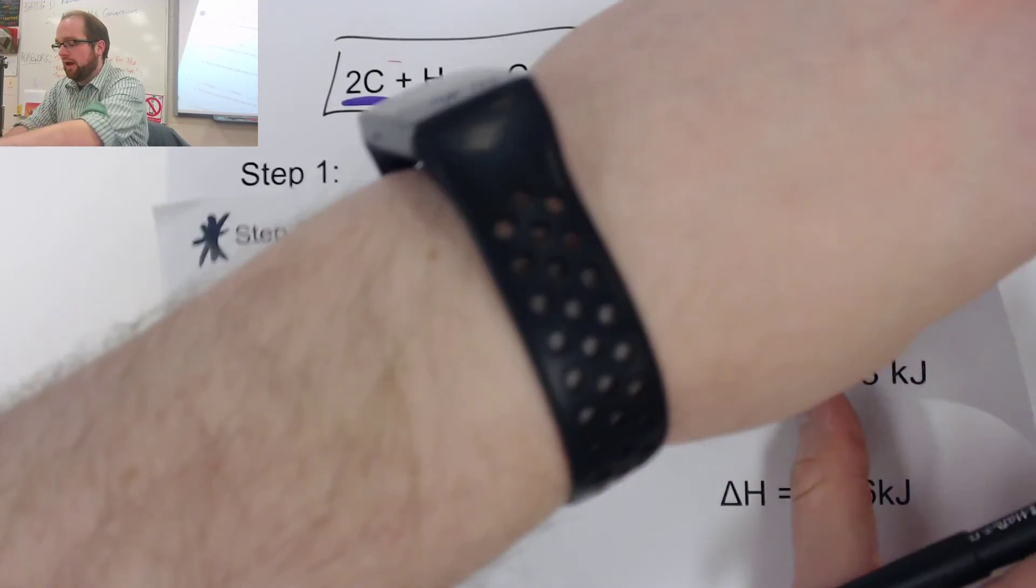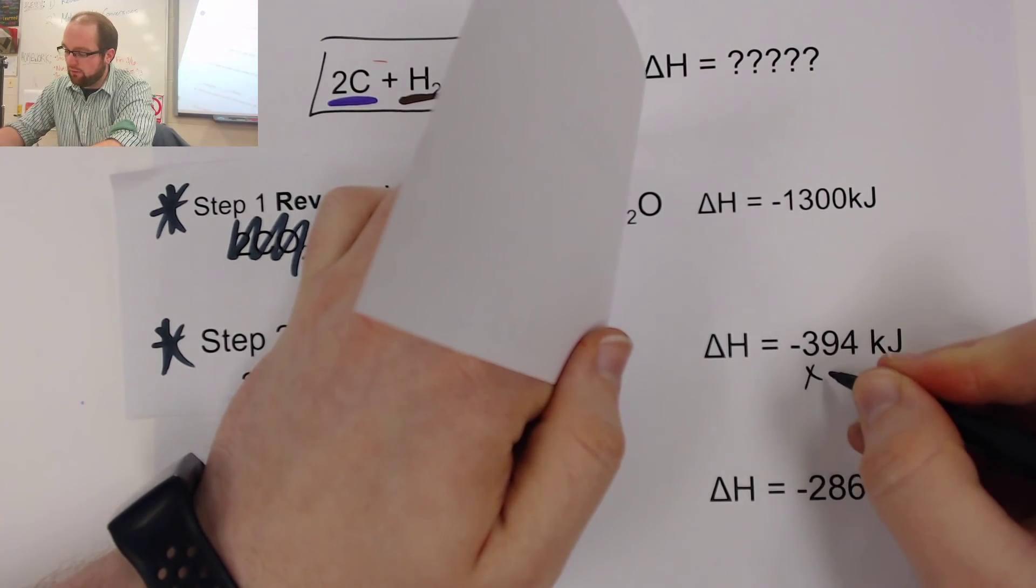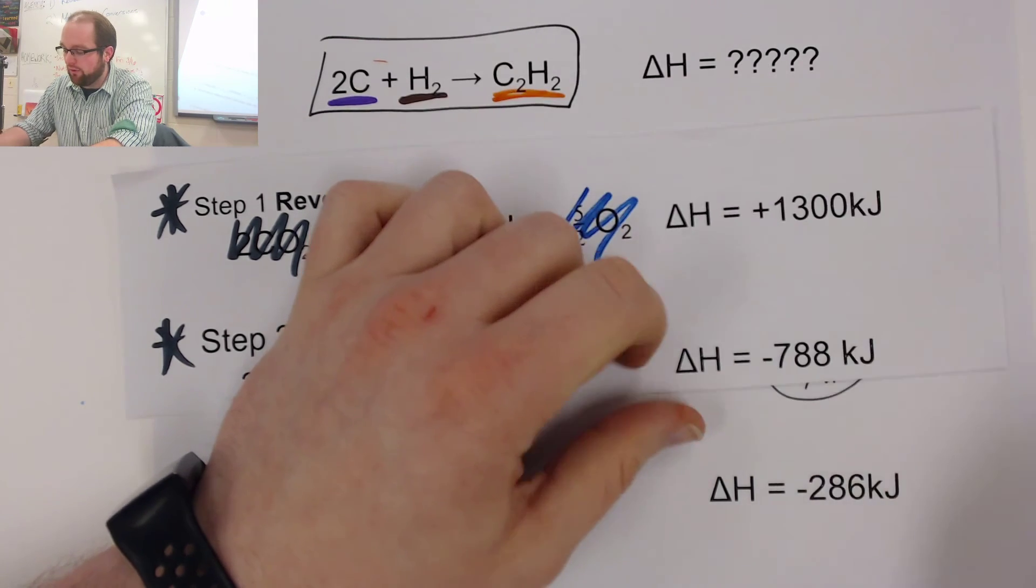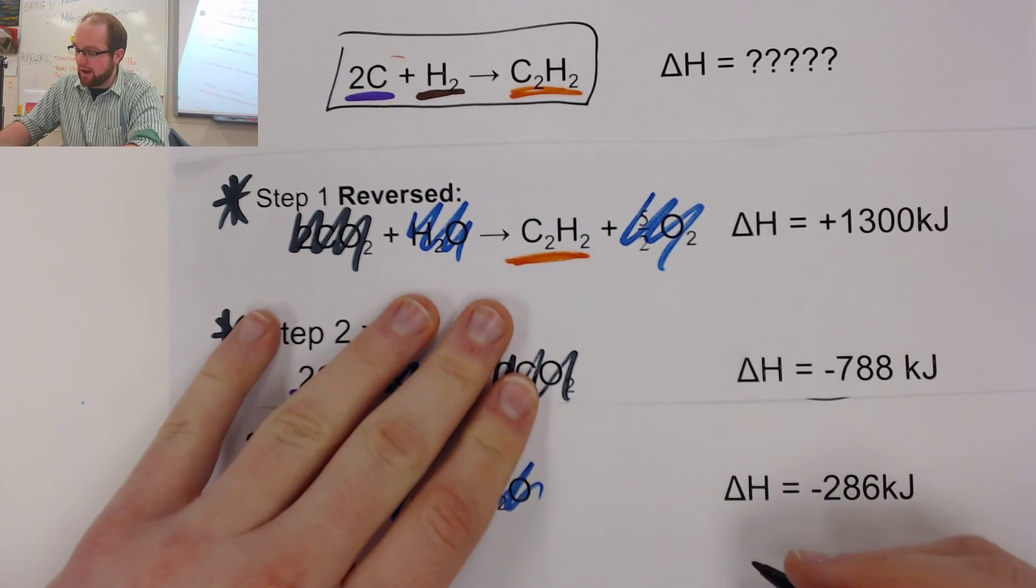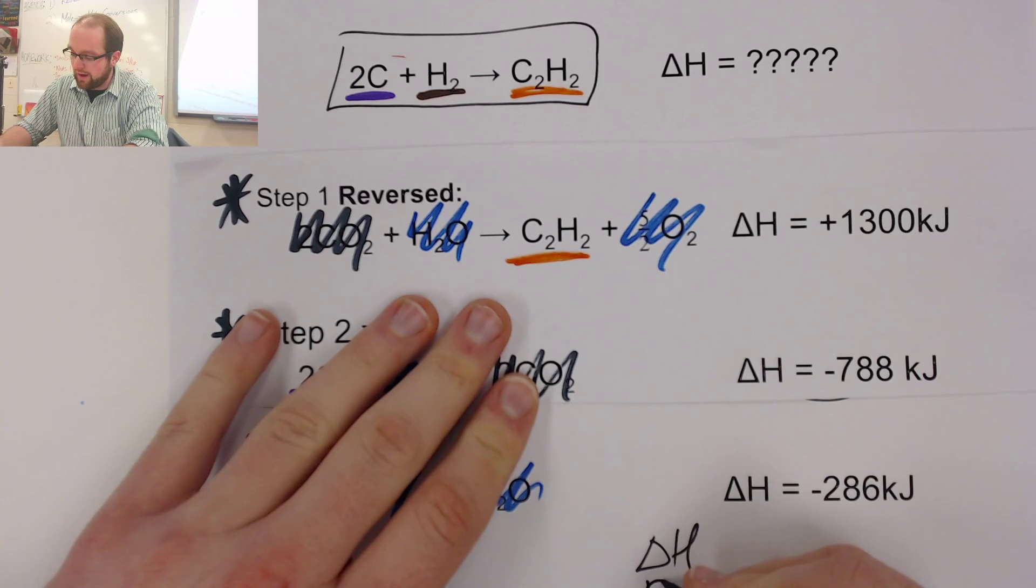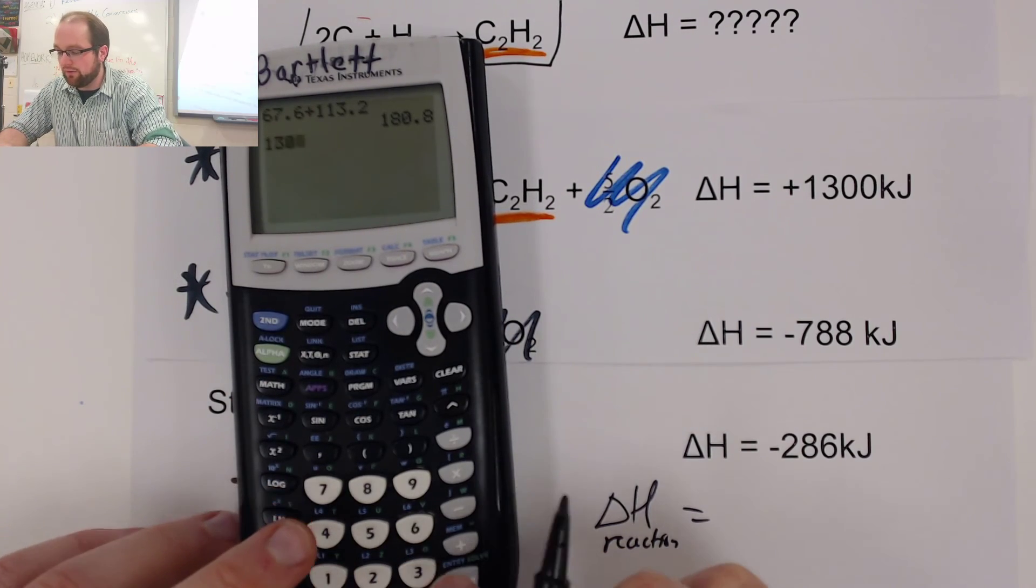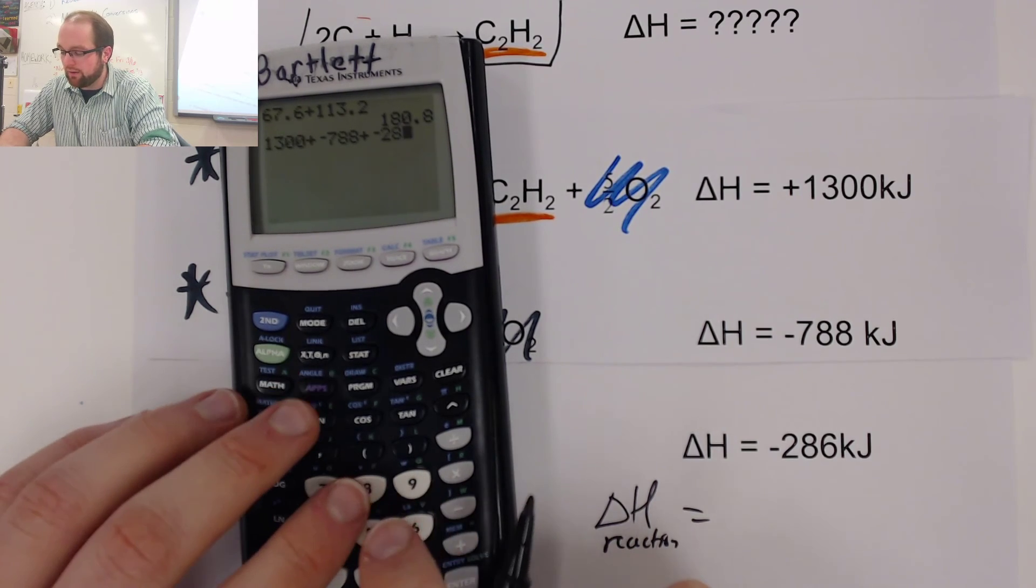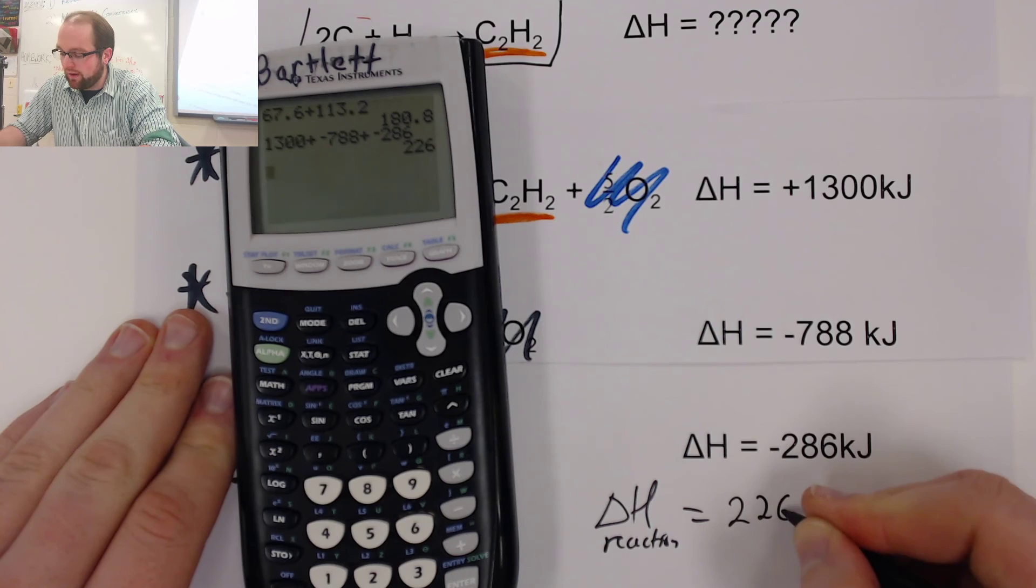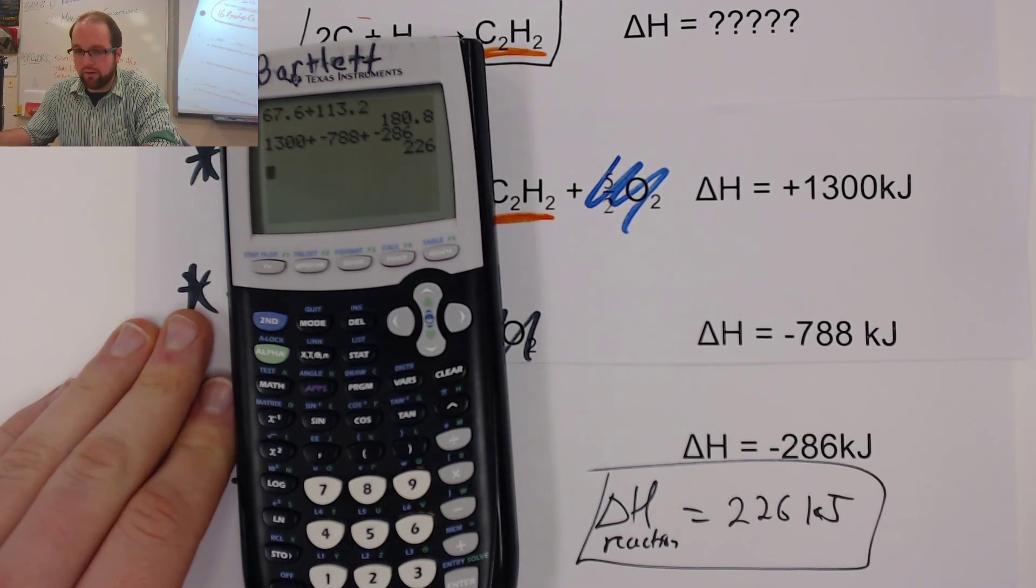So because we did our manipulation here, when I flipped my delta H, I changed it from negative to positive. I had the negative 394 and I multiply that by two to give me negative 788. What I'm going to do here is I'm going to add up all of my delta H's for my overall reaction very simply just by typing all these numbers that I manipulated in my calculator. 1,300 plus negative 788 plus negative 286. And my overall reaction, again, ends up being endothermic, but it ends up our total for all of our different steps.